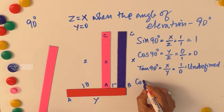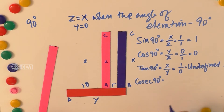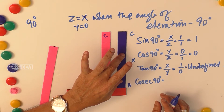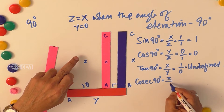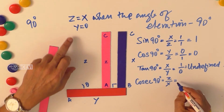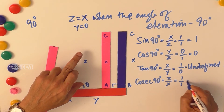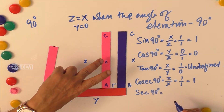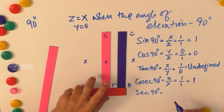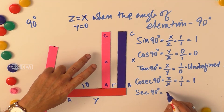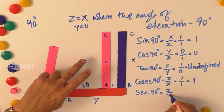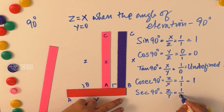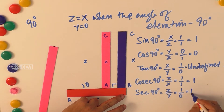Cosecant 90 degrees is nothing but hypotenuse divided by opposite, which is Z by X — that is 1 by 1, which equals 1. Secant 90 degrees is nothing but hypotenuse divided by adjacent, which is Z by Y — that is 1 divided by 0, because there is no adjacent — so it is undefined.